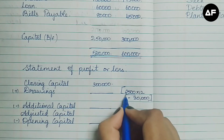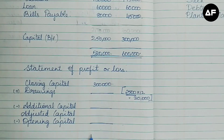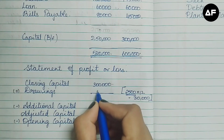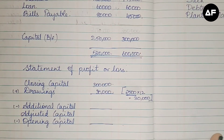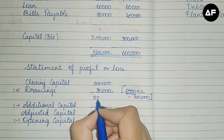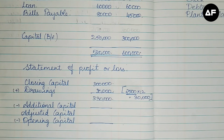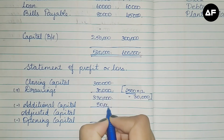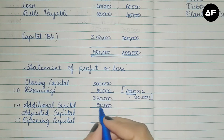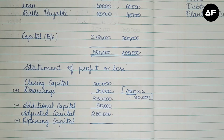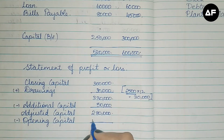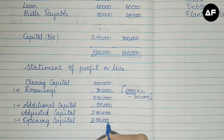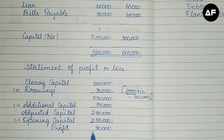We multiply drawings by 12 because they were given per month but profit or loss is calculated for the year. So drawings total is 30,000. Next, the additional capital is 50,000: subtracting 50,000 from 3,30,000 gives an adjusted capital of 2,80,000. The opening capital from the 1-1-2018 column is 2,50,000. Subtracting 2,50,000 from 2,80,000 gives a profit of 30,000. This is one way of doing the sum.